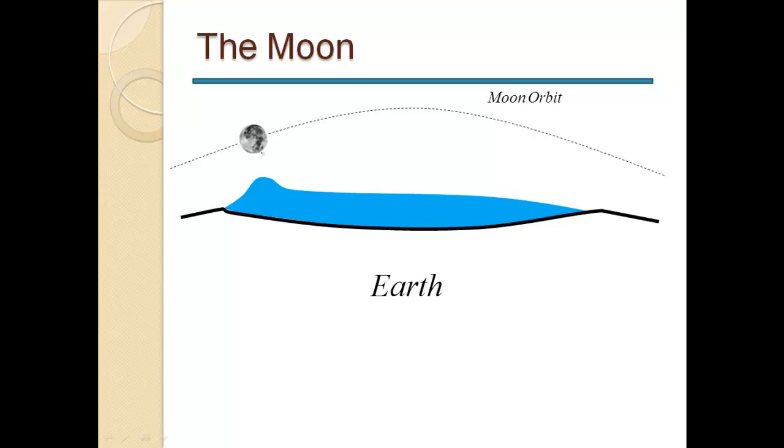What will then happen is the moon doesn't stay where it is. It is rotating around our planet, the Earth. Now what will happen is it will move here. The water here perpendicular to that will be gravitated very strongly.